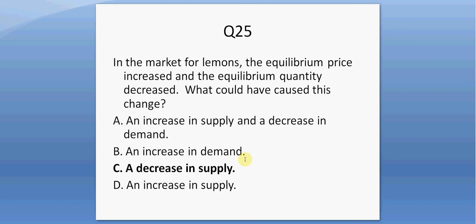Question twenty-five. We observe in the market for lemons that equilibrium price has increased and equilibrium quantity has decreased. What could have caused this change? A decrease in supply — the supply curve shifts to the left, pushing up the equilibrium price, and consumers buy less at higher prices so the equilibrium quantity falls.